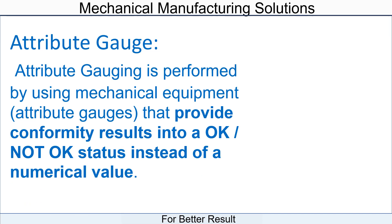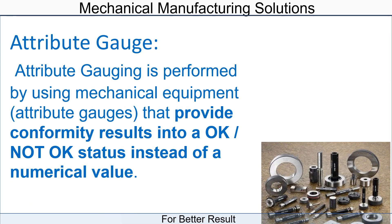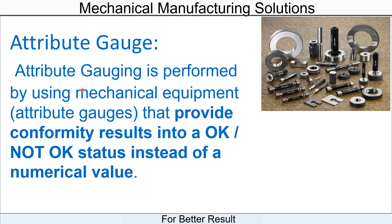Attribute gauging is performed by using mechanical equipment that provides a conformity result — an OK or not-OK status — instead of a measured numerical value. In mechanical manufacturing industries or any engineering field, during mass production we can't check the dimension or reading of every product. For that purpose, plug gauges, ring gauges, and slip gauges are implemented to ensure product conformance.